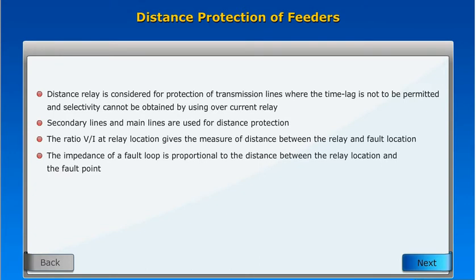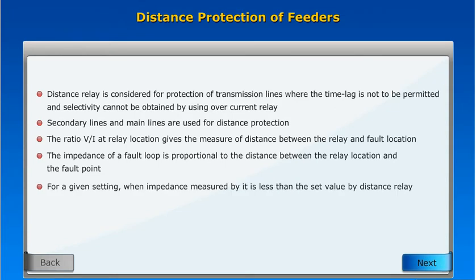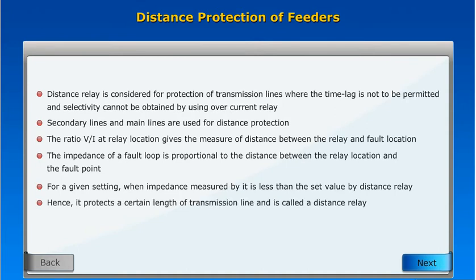The impedance of a fault loop is proportional to the distance between the relay location and the fault point. For a given setting, when the impedance measured by the distance relay is less than the set value, it protects a certain length of the transmission line, and hence is called a distance relay.